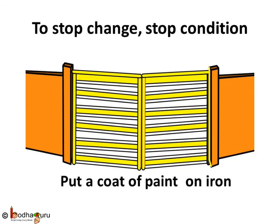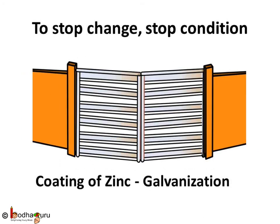For that, we can paint the iron object. Now you know why iron gates or grills of windows are painted, apart from their better looks. Zinc and nickel layers are also put on iron to stop rusting. This process of depositing a layer of zinc on iron is called galvanization. The iron pipes we use in our homes to carry water are galvanized to prevent rusting.